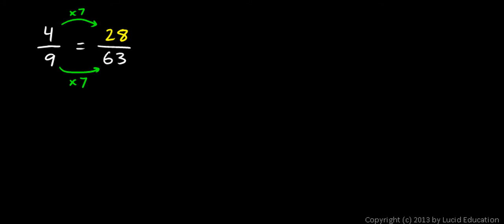4 ninths is equal to 28 sixty-thirds. And as long as I take the numerator and the denominator and multiply them both by the same number, then I get a fraction which is equivalent to my original fraction. 4 ninths is in fact equal to 28 sixty-thirds.